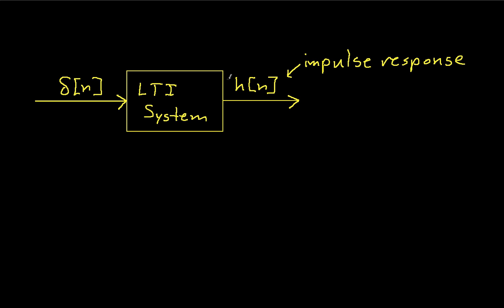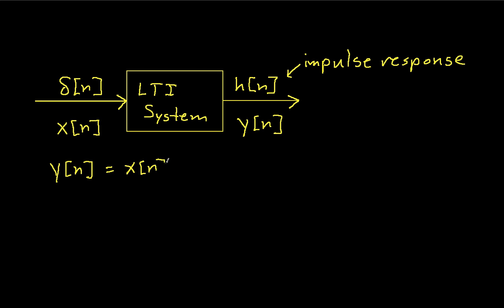It turns out that if we know the impulse response, we can actually find how this system will respond to an arbitrary input. So I have some arbitrary input x of n, and that gives me some arbitrary output y of n. It turns out that y of n is equal to x of n convolved — that's a star — with h of n. This does not mean multiplication. In this context, a star between two signals means that they're being convolved.